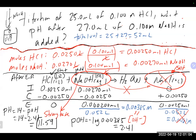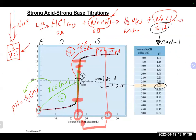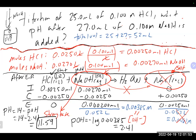A pH of 11.59 is definitely basic, which is expected when dumping excess strong base into the solution. Checking against the table, 27 mL falls between two listed values and our pH of 11.59 is between those corresponding pH values. Any questions on strong acid-strong base titration?